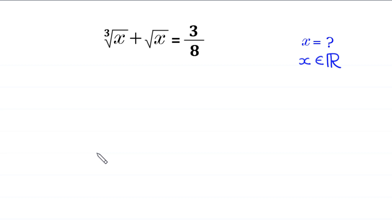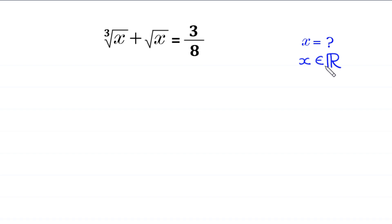Hello, welcome to how to solve this very nice radical equation. Cube root of x plus square root of x is equal to 3 over 8. We need to find all possible values of x, where x is a real number.